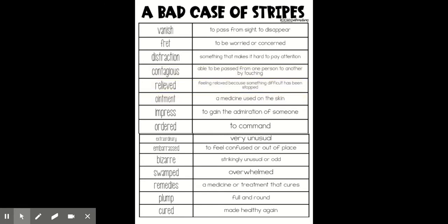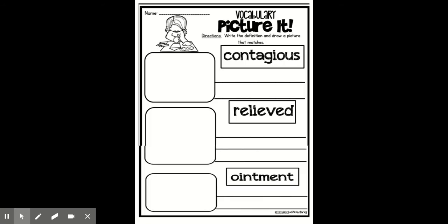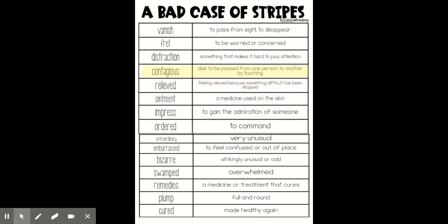You can use these to help you write your definitions on your vocabulary picture sheet. Contagious means able to be passed from one person to another by touching — also by breathing. Sometimes you can be around someone and if you breathe in the air or if they sneeze, you can catch what they have. You will copy this definition down on your page.